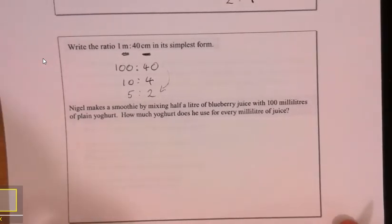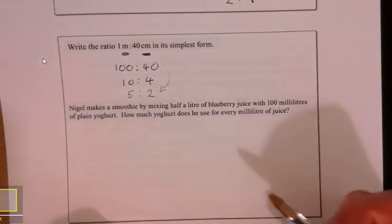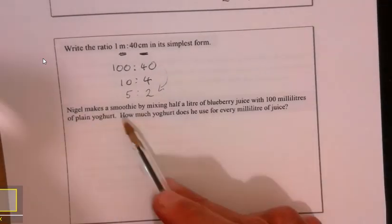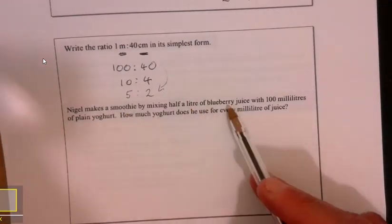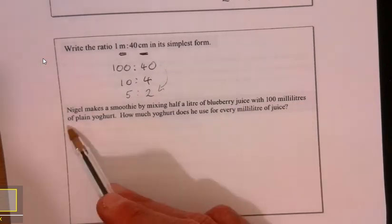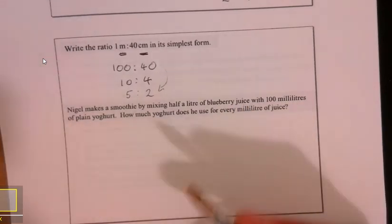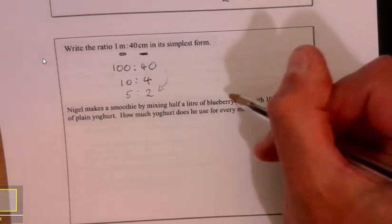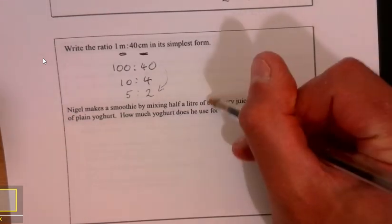The only way these questions get a little bit trickier is because they're trying to give you a bit of context, get a bit confusing with some of the wording. Let's have a look. We've got Nigel. He's making a smoothie by mixing half a liter of blueberry juice with 100 milliliters of plain yogurt. We've got blueberry and we've got plain yogurt.